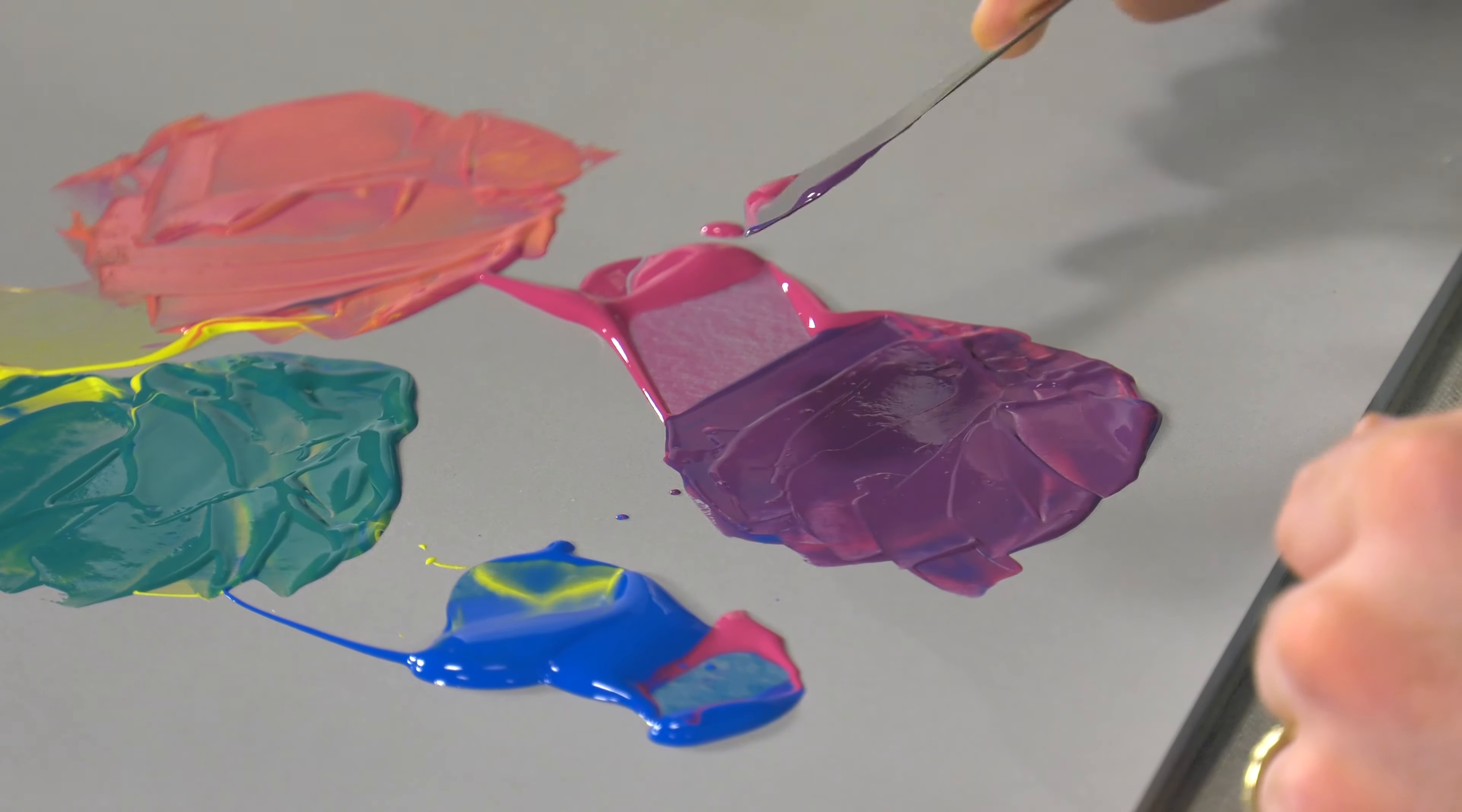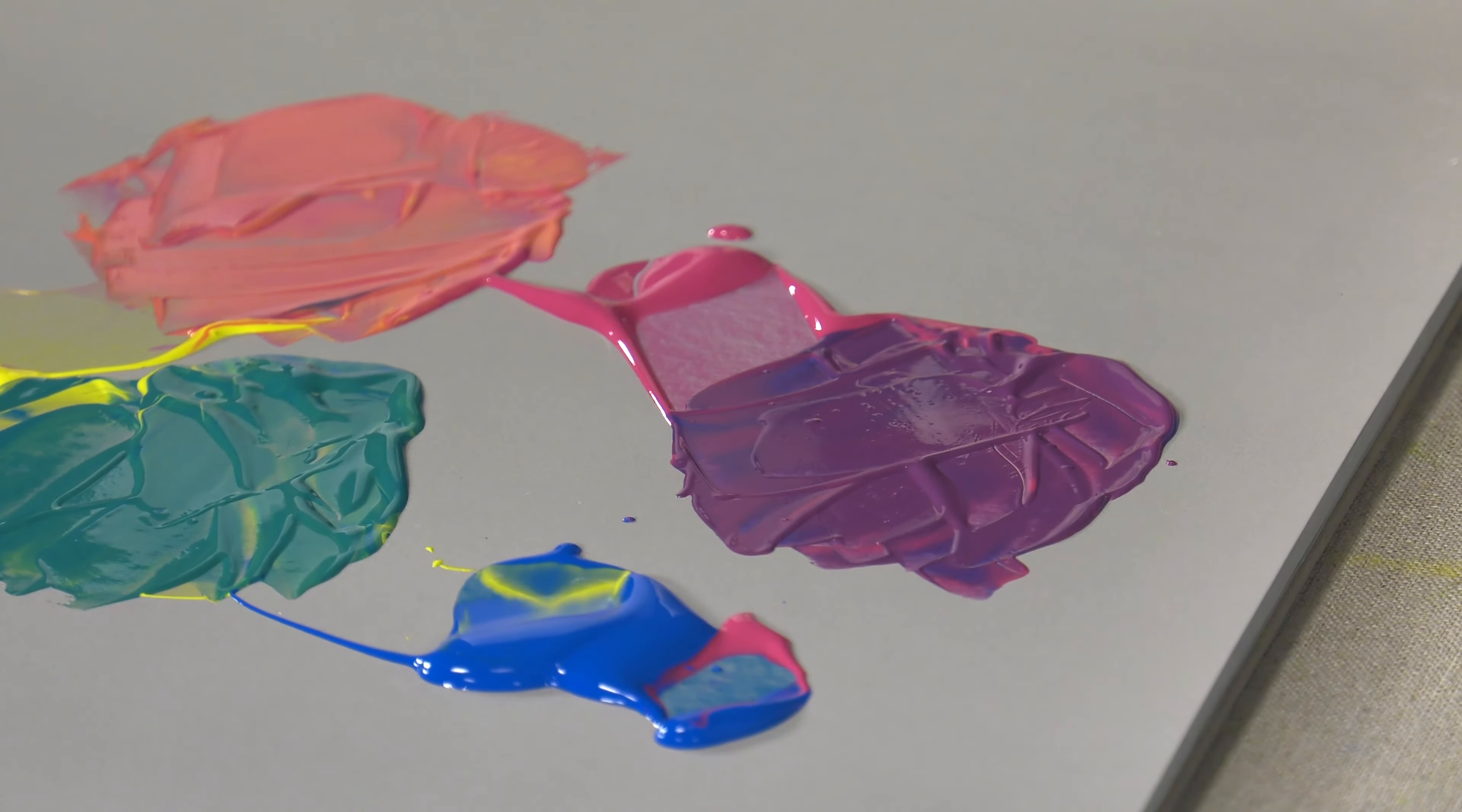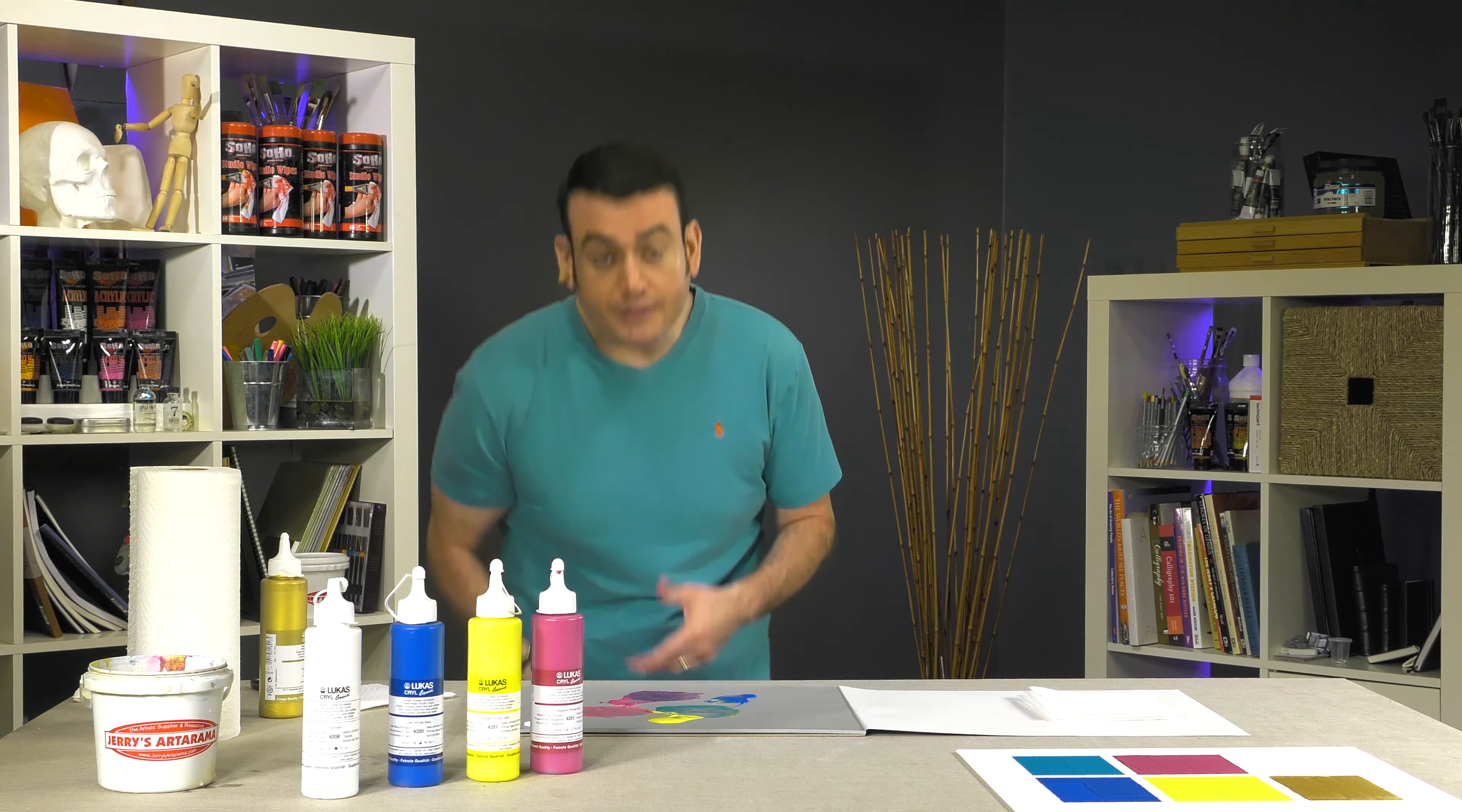They're not going to retain brush strokes, so that's part of the reason they do really well for fine detail. Also, the paint film is extremely flexible. They will not crack or shrink or wrinkle during drying, and they'll dry very reliably in about 15 minutes. That's fast drying acrylic paint, and that goes across the board for all the paints in the line.